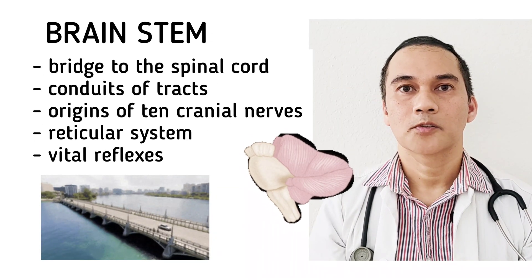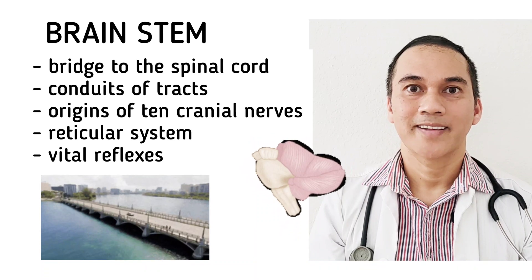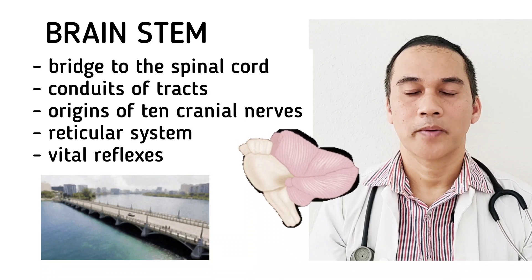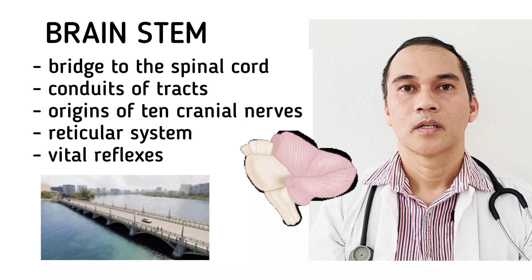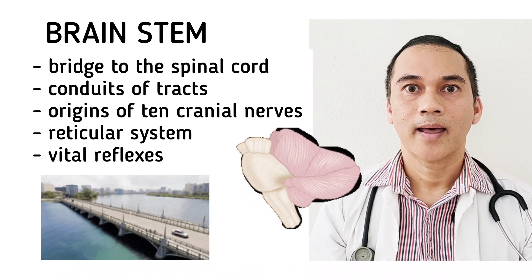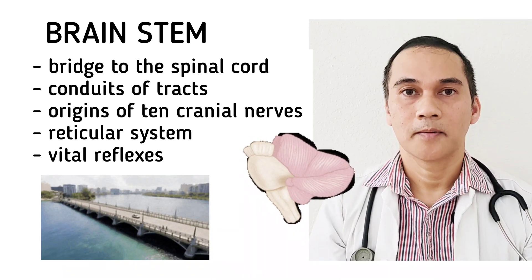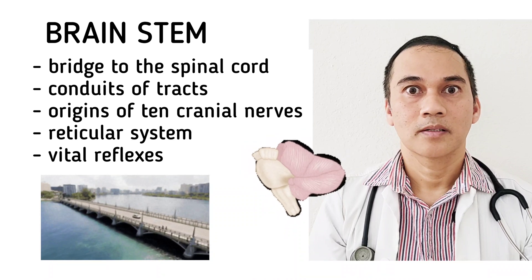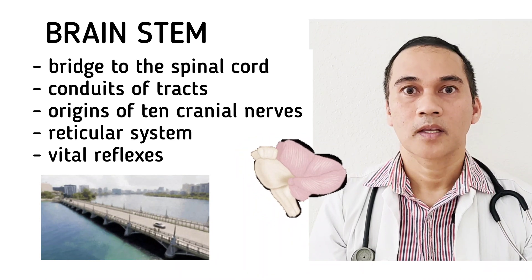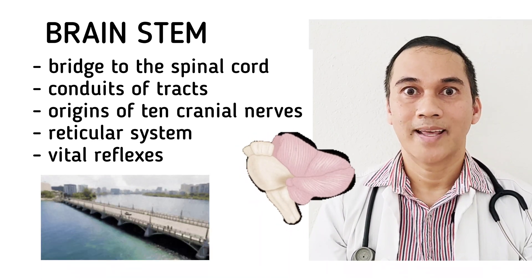Now let's talk about the brainstem. The brainstem is the bridge that connects the cerebrum and cerebellum to the spinal cord. It is a conduit of tracts — all those afferent and efferent tracts, your spinothalamic, your dorsal column, your corticospinal tract pass through the brainstem. The brainstem also contains 10 of the 12 cranial nerves. It contains the reticular system, which is responsible for arousal and the wake-sleep transition. The brainstem also has the vital reflexes that control respiration and breathing.